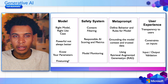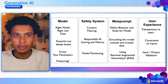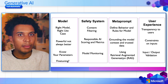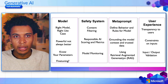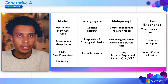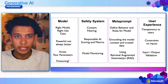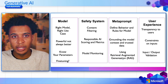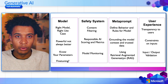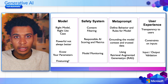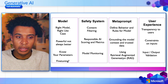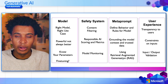First is the model side — right model, right use case. Large language models can do many things, but some are more specialized than others. Using the most powerful model is not always better. You can use a specialized model more attuned to your use case, or know the parameters like model temperature and how that affects responses, and even the option of fine-tuning or using a fine-tuned model more geared to your use case. These are all great ways to mitigate on the model side.